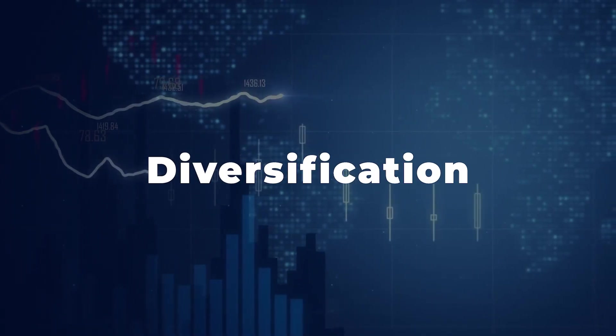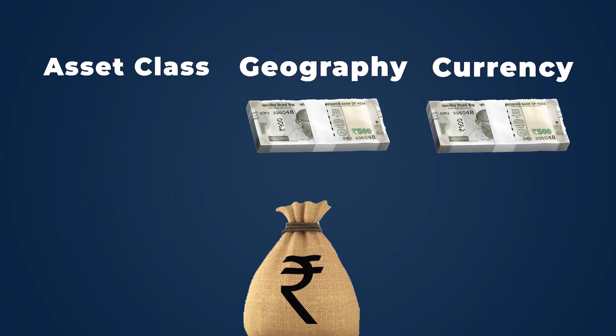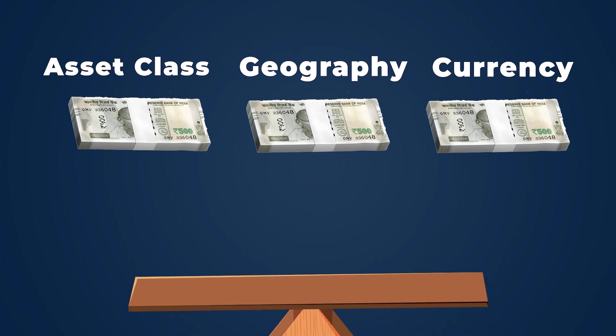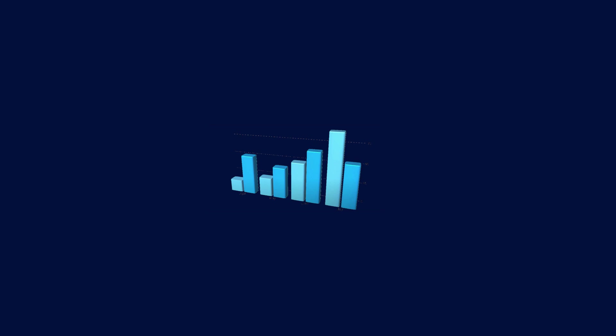Number one reason is diversification. Diversification simply means you are not staying invested in one type of asset class, one geography, or one currency. You are trying to diversify or spread it across geographies, currencies, and asset classes. It's kind of a hedging strategy. You can imagine a seesaw. For example, if you want to start a business, maybe you are asking your wife not to quit her job because that will give you stability at the volatile time. The same is true in case of constructing our portfolio.